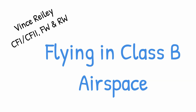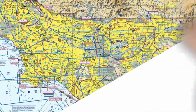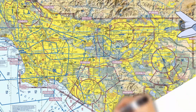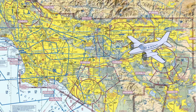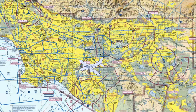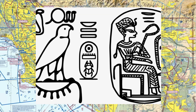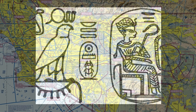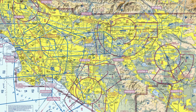Let's start with a view of one of the busiest Class B areas in the western U.S., Los Angeles. To a new pilot, this truly might look like hieroglyphics. Working with ATC is like learning a new language, but once you learn why they do what they do and how they do it, it's easy.